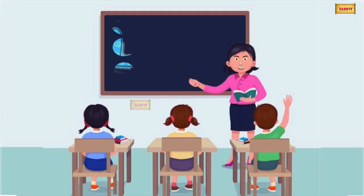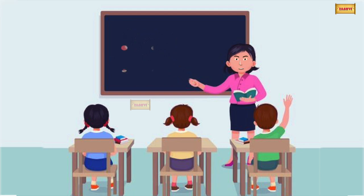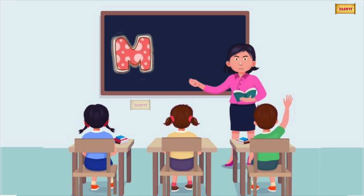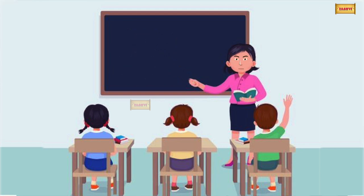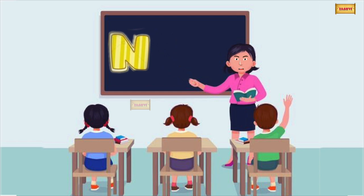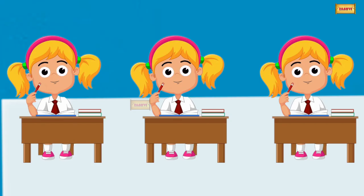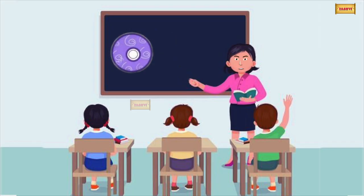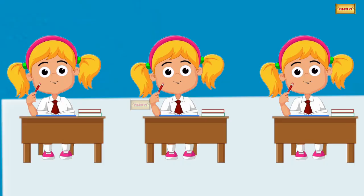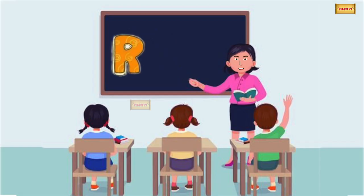K for kite, L for lion, M for monkey, N for nest, O for orange, P for pen, Q for queen, R for rabbit.